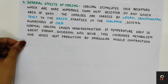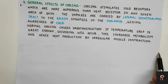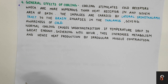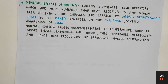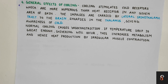Next we will see the general effects of cooling. When cold is applied, it stimulates the body's cold receptors, which are more numerous than heat receptors in any part of the skin. Impulses are carried to the brain by the lateral spinothalamic tract, which synapses in the thalamus, giving awareness of cold. Normal cooling causes vasoconstriction. If the temperature drop is severe, shivering will occur, which increases metabolism and heat production by irregular muscle contraction.